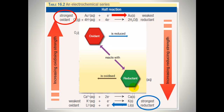You need both species for the reaction to go ahead. The oxidant is being reduced. So the reaction at the top of the electrochemical series — the higher reaction — must always be going in a forwards direction, because it must be the reduction reaction.